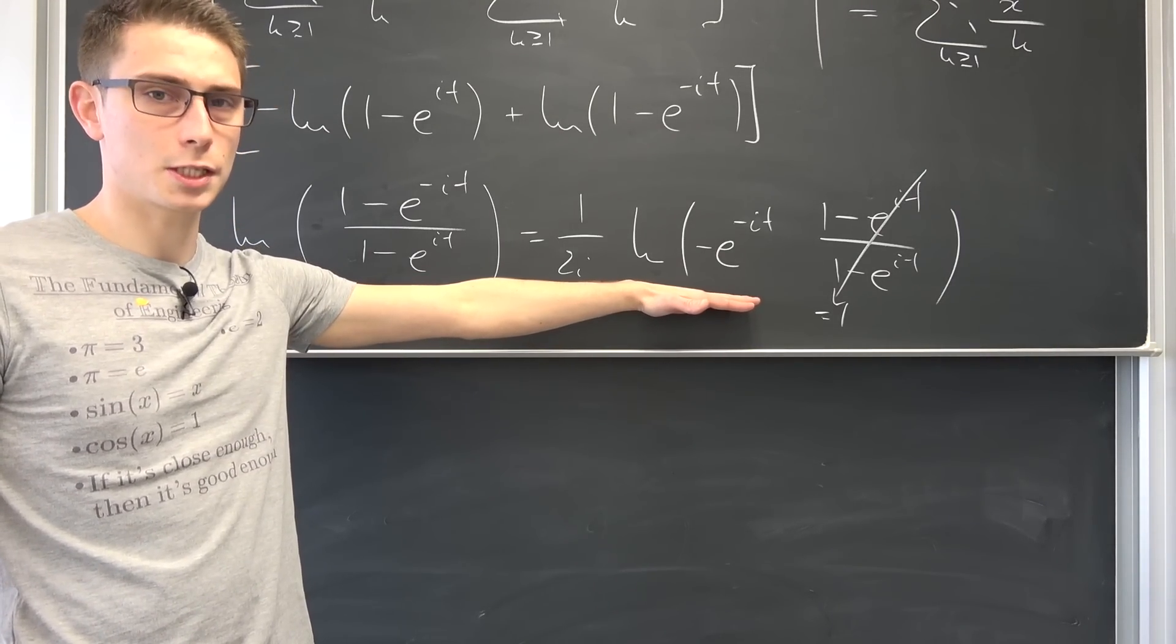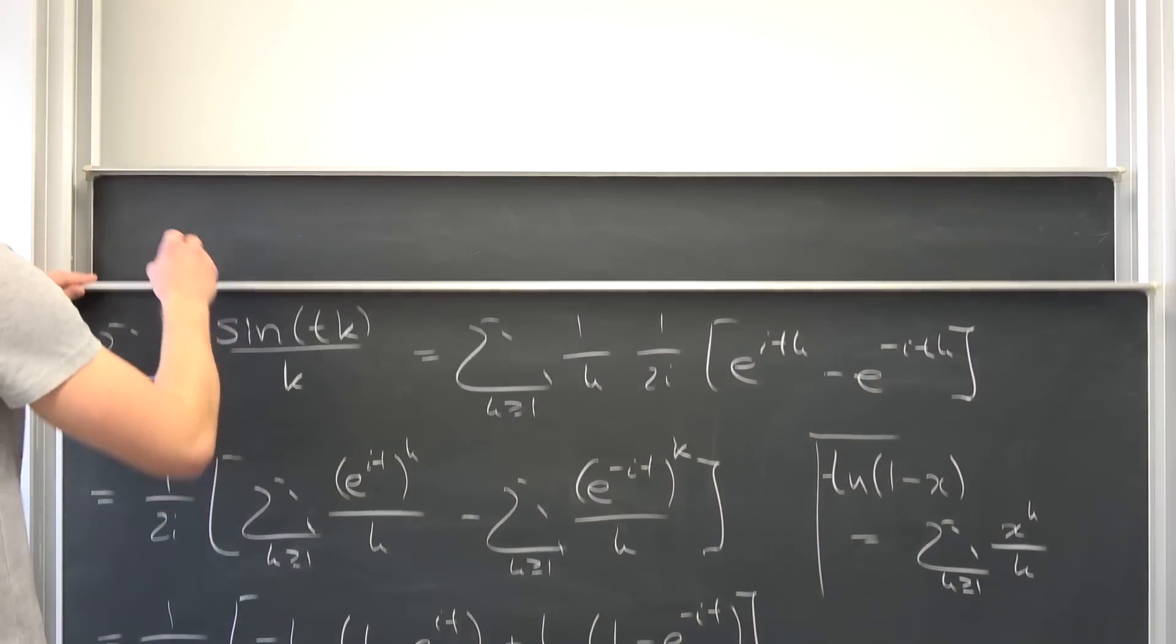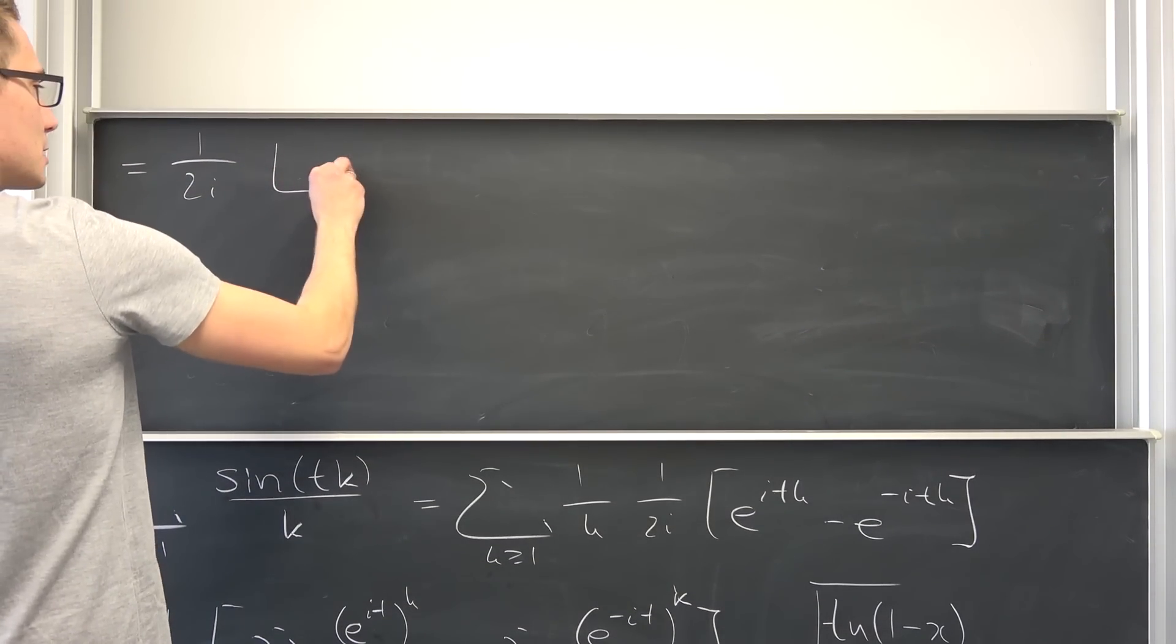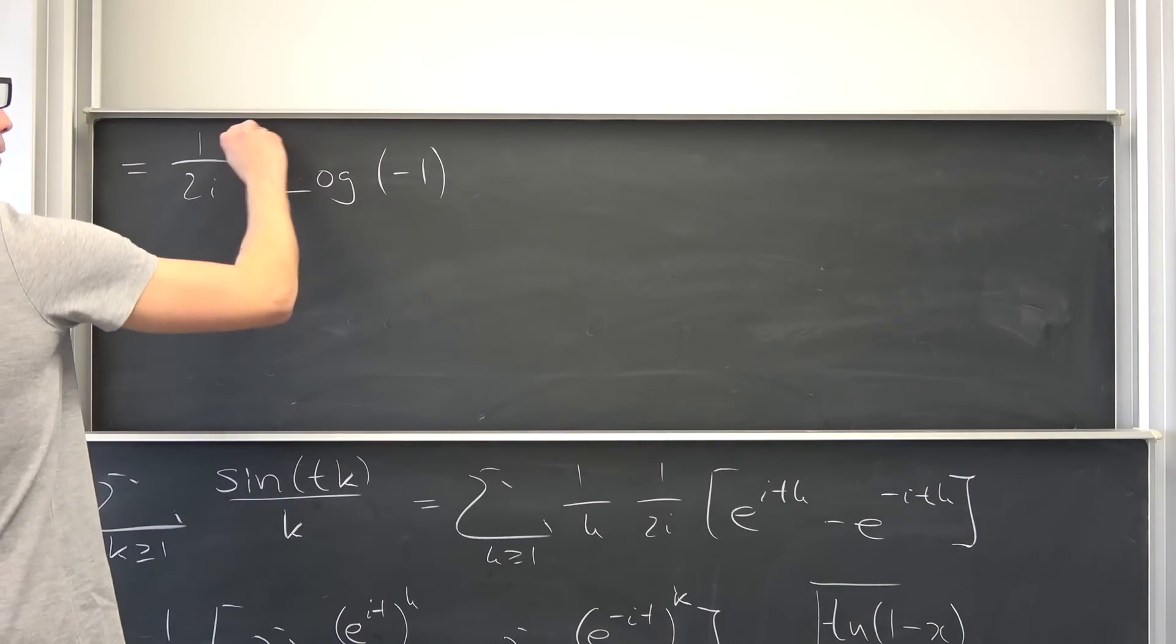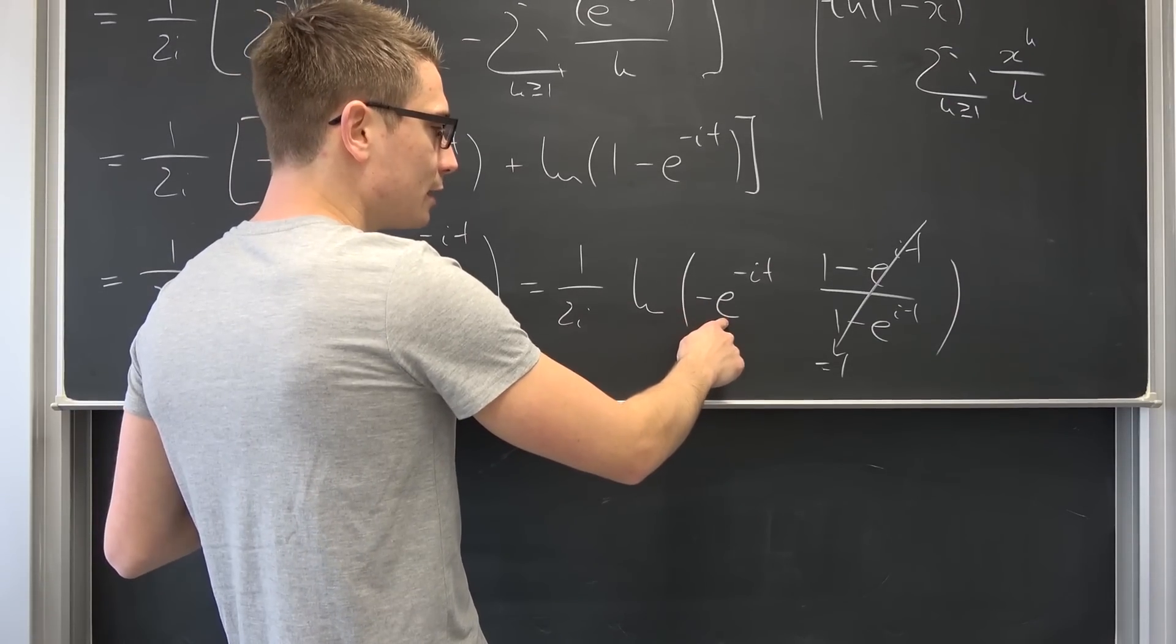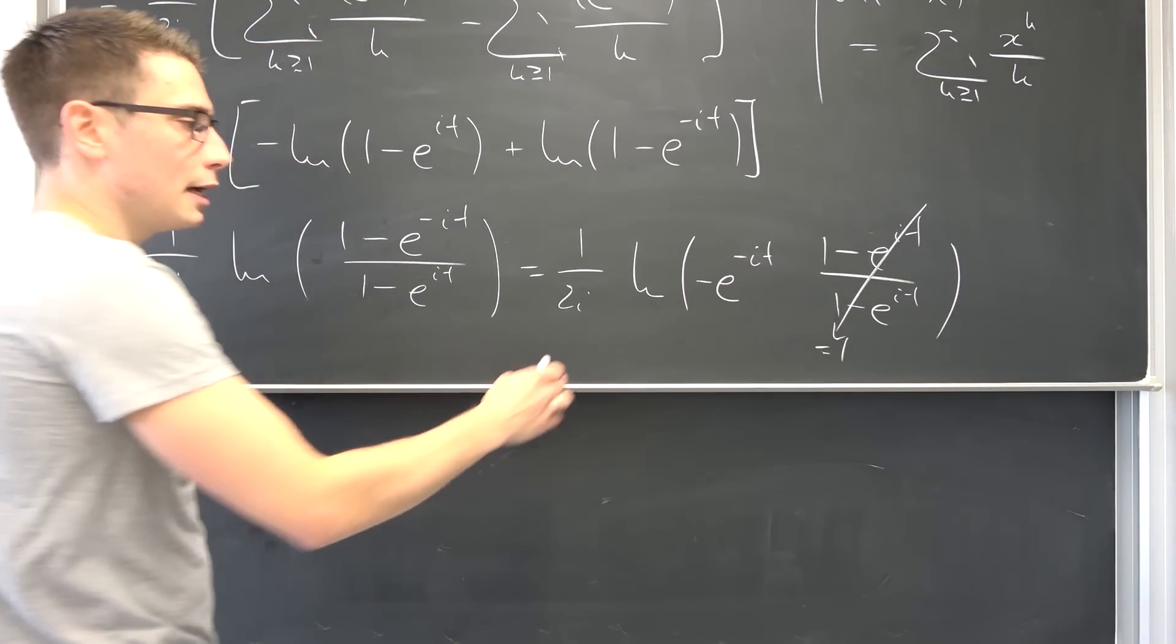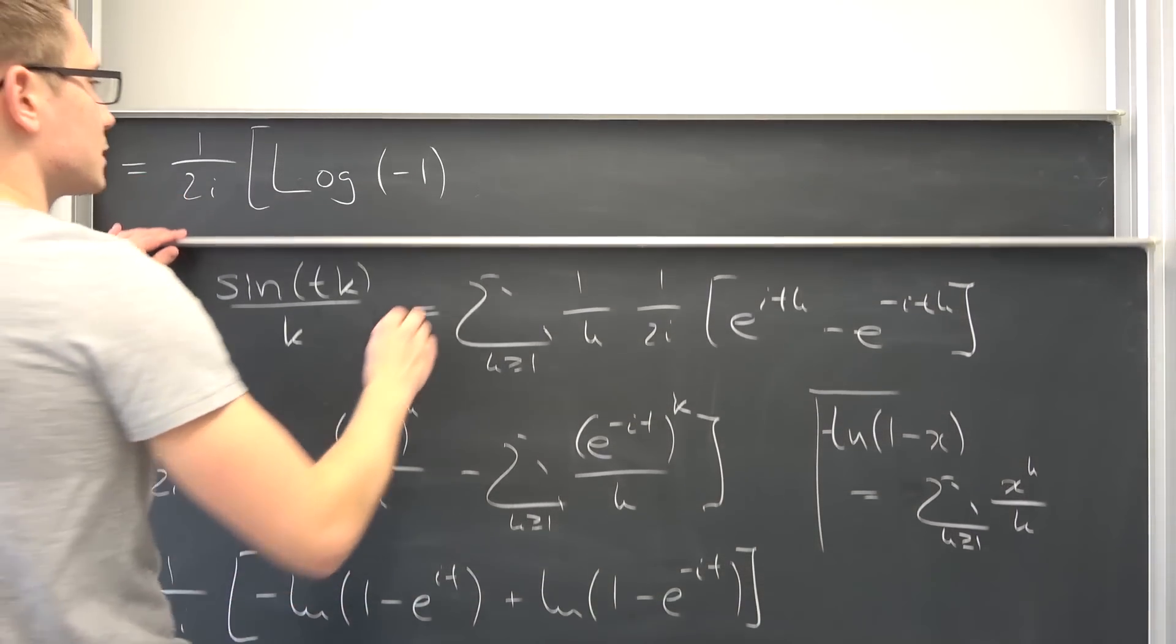So the principal log of this whole thing. I'm going to denote it by this capital log right here. So log of negative 1, and then we are going to get plus ln of e to the negative it. ln of e to the something is just a something in itself. So negative it.